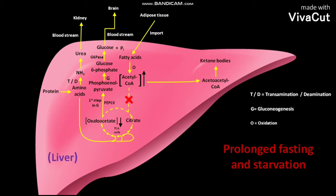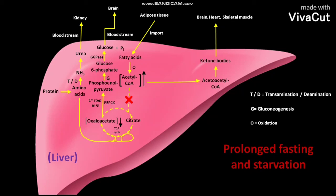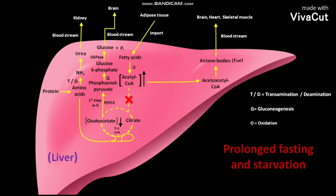These ketone bodies then travel to the brain, heart, and skeletal muscle via the bloodstream. These organs use ketone bodies as fuel instead of glucose.